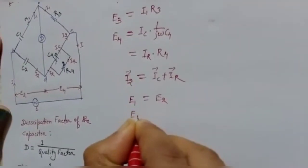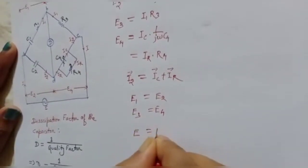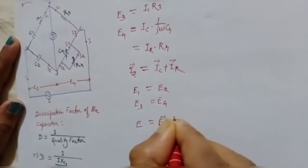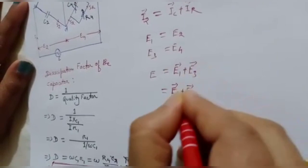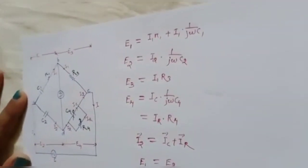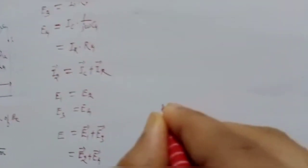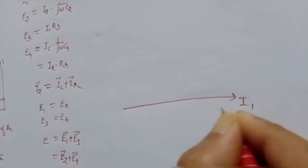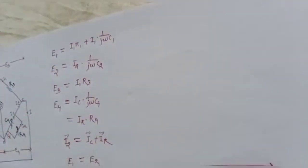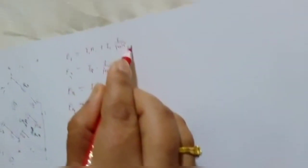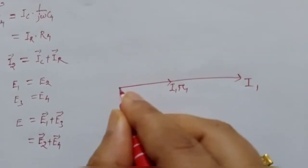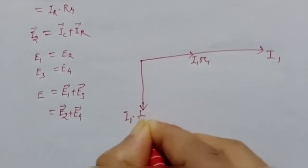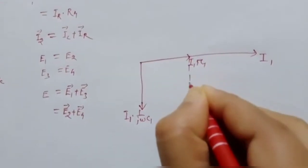At balance condition, E1 equals E2 and E3 equals E4, and the total voltage E is the phasor sum of E1 and E3, or equivalently E2 plus E4. Taking I1 as the reference phasor: I1·R1 is in phase with I1, and I1·(1/jωC1) is a capacitive voltage which lags the current I1 by 90 degrees.